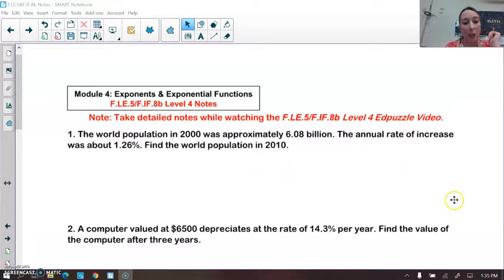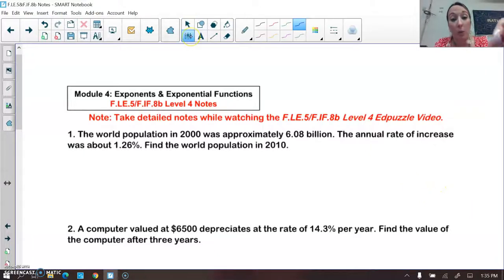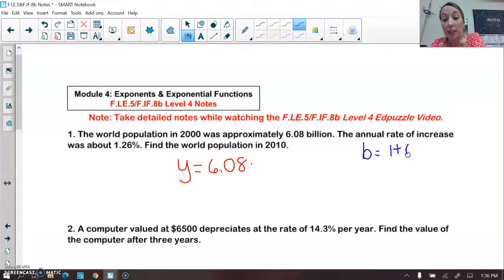The world population in 2000 was approximately 6.08 billion. The annual rate of increase was about 1.26%. So if I were to write this as an exponential growth, because we're increasing every time, I would start off with 6.08 as my a value, and then times, remember my b value would be 1 plus the percent expressed as a decimal.